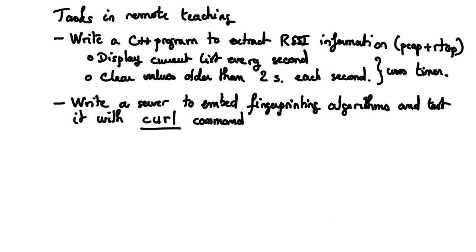What tasks do you have to do for the project? All these tasks will be further defined and detailed in the git-info repository. You have to write a C++ program which will extract RSSI information with PCAP and RadioTap, and display the current list of RSSI that you have every second, while clearing values that are older than 2 seconds. You will use a timer. From the lecture about PCAP and RadioTap, all you have to do is glue together the code extracts that I showed you.